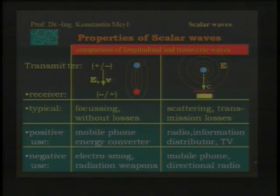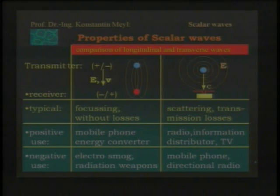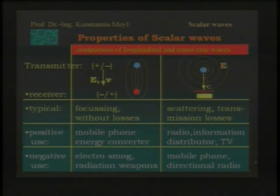Directional radio — that's nearly the same as mobile phoning. On the other hand, the negative use for scalar waves will be if the receiver is a human being and not a technical receiver. As long as you are using a technical receiver, you have no negative effectiveness because the technical receiver gets all field lines and there is no rest. But if the human being is the receiver, then we speak about electrosmog or even radiation weapons, as Tesla has spoken about.